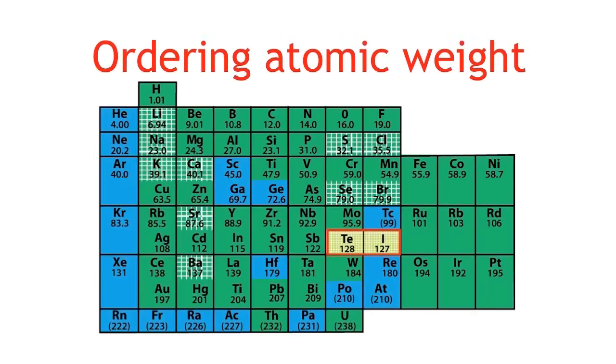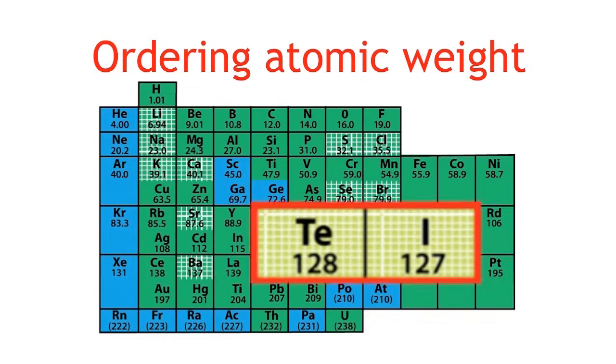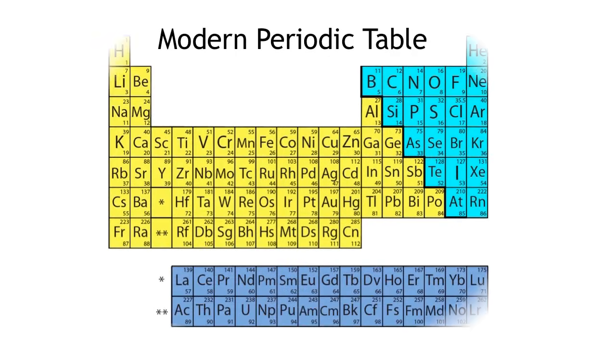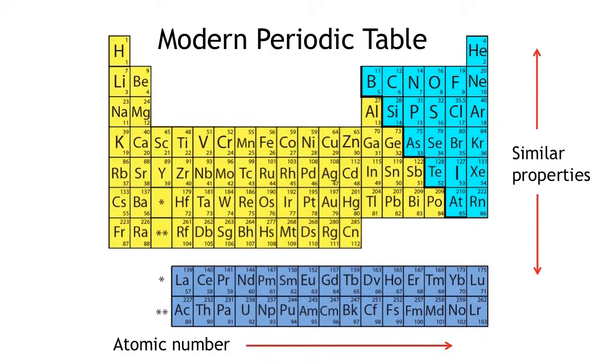Other problems with ordering the atomic weight also caused issues. These problems have been solved in the modern version of the periodic table we use today, giving us an excellent resource to understand the elements and all that we and our surroundings are made of.